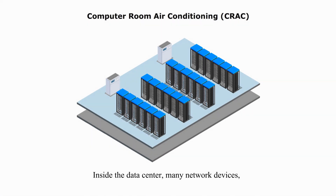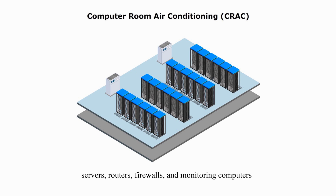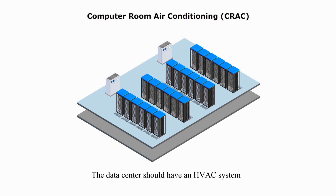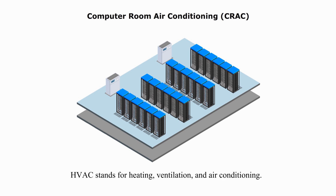Inside the data center, many network devices like switches, bridges, or hubs don't produce a lot of heat. On the other hand, servers, routers, firewalls, and monitoring computers can generate a huge amount of heat. The data center should have an HVAC system separate from the rest of the building. HVAC stands for heating, ventilation, and air conditioning. The thermostat is used to monitor the temperature.